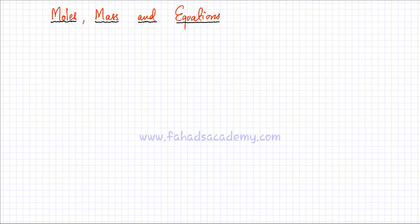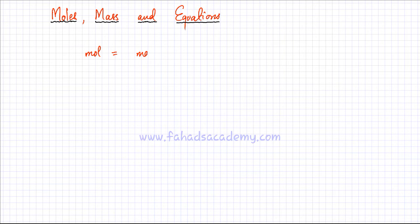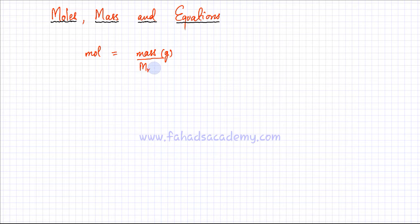In this lecture we're going to link moles and mass with equations. First, let's revise the link between moles and mass. We came up with a formula: moles is equal to mass in grams over Mr or Ar. Mr is the molecular mass, Ar is the atomic mass. If you're dealing with atoms you use Ar; if you're dealing with molecules you use Mr.